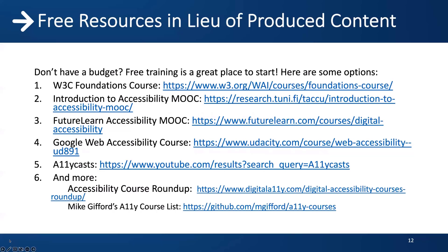Don't have budget? Look at free options first. Some free offerings include: W3C's Foundations course, Introduction to Accessibility through Massive Open Online Courses (MOOC), FutureLearn Accessibility through MOOC, Google Web Accessibility Course, Ally Casts, Accessibility Course Roundup, and Mike Gifford's Ally Course List. If you can't track these in your learning management software, you may be able to assign these courses and have learners self-certify. If you're just getting your program off the ground, this might be an excellent way to start small and put something in place.